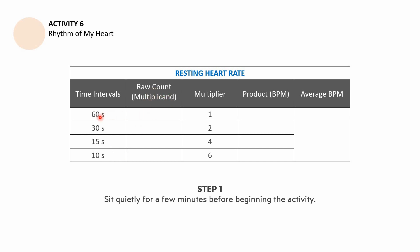For 60 seconds, while sitting quietly, count the number of beats you feel from your pulse, then multiply by one — so the raw count and the beats per minute are the same number. For example, say you counted 30 beats, you write down 30. For 30 seconds, say you counted 15 beats, multiply by 2 to get 30.